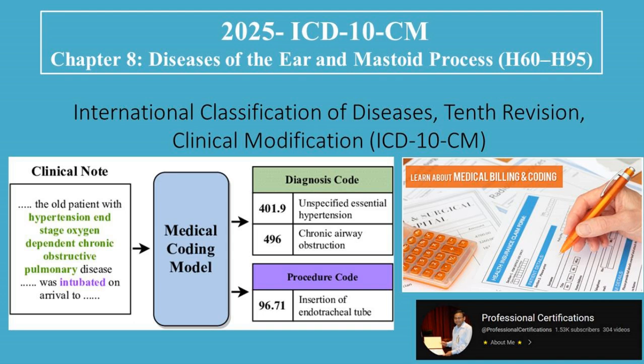Welcome to Professional Certifications Channel. Today we're exploring Chapter 8 of ICD-10-CM, which focuses on diseases of the ear and mastoid process, with codes ranging from H60 to H95. These codes are essential for coders working in ENT — ear, nose, throat — clinics, audiology, emergency departments, and primary care. Let's jump into how to accurately code conditions related to the ear.